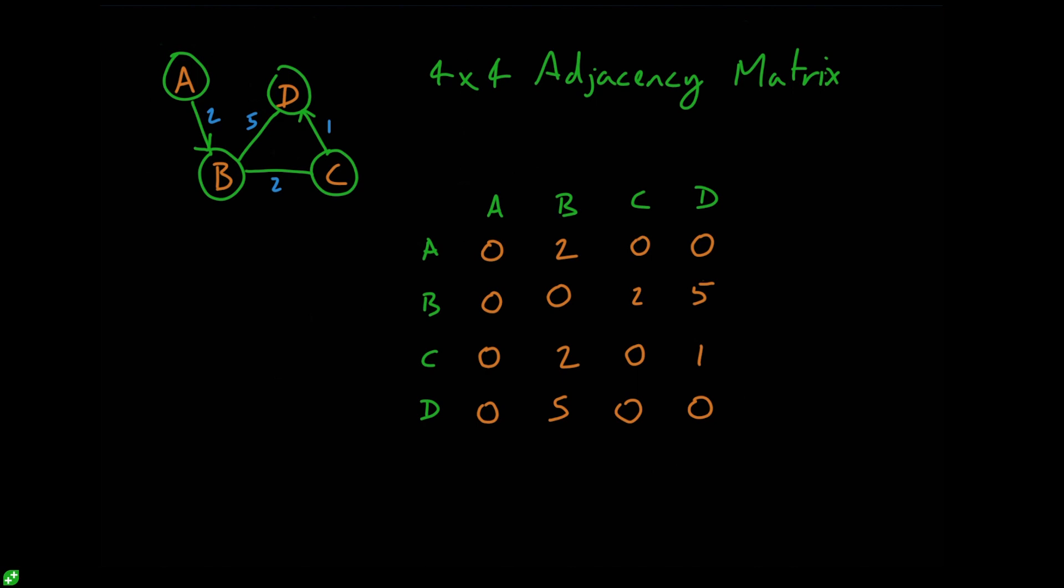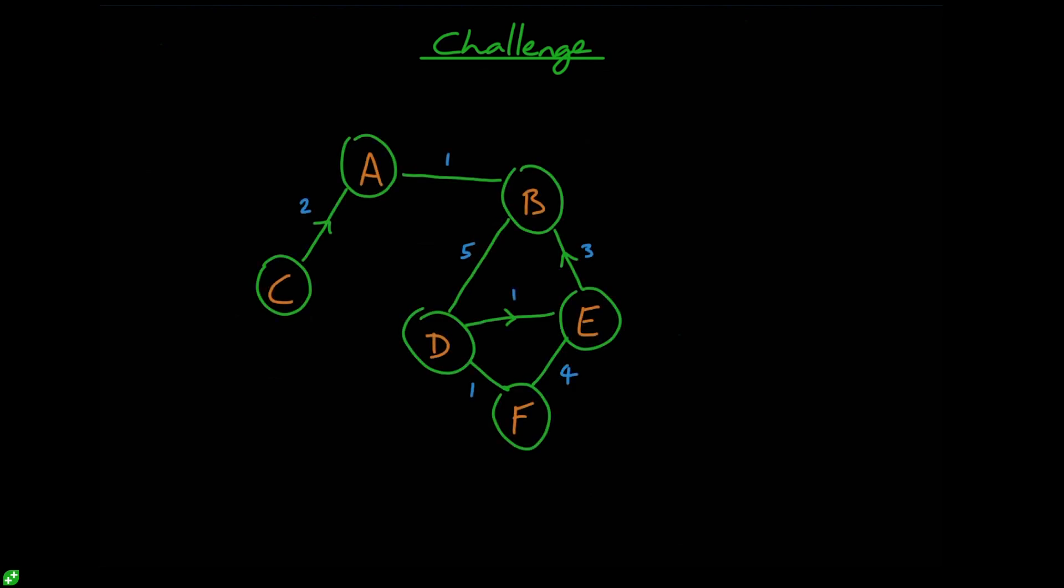Okay, for your challenge, let's bring in a weighted directional graph here. What I want you to do is to convert this graph into an adjacency matrix. There are six nodes in total, so this is going to be a six by six matrix. Once you're done, pop your answer in the community forum to let us know how you got on, and I'll see you in the next lecture.